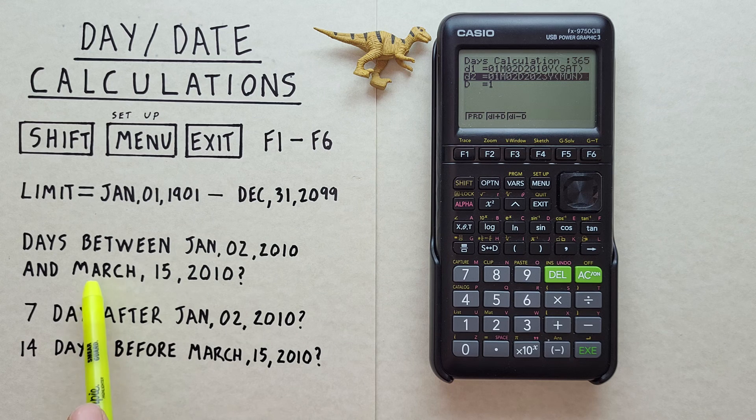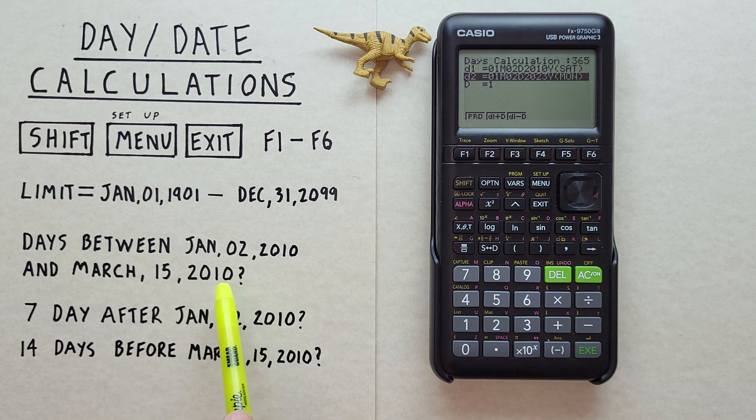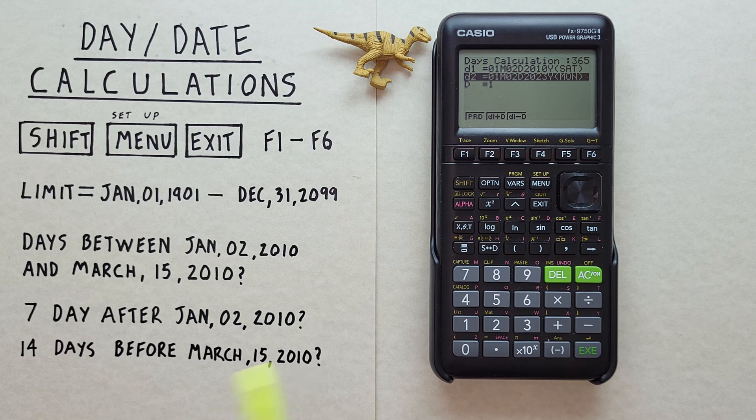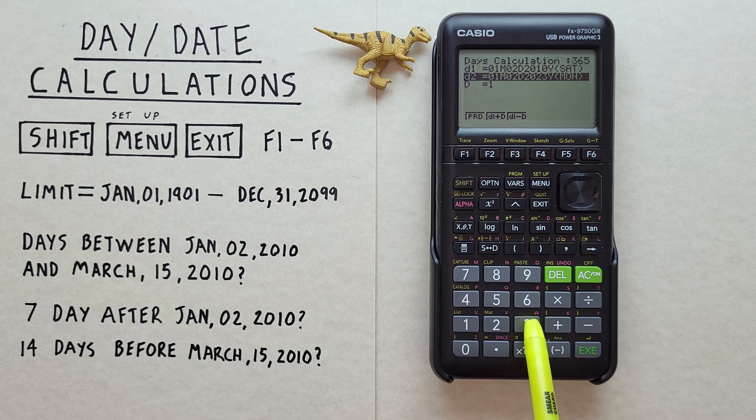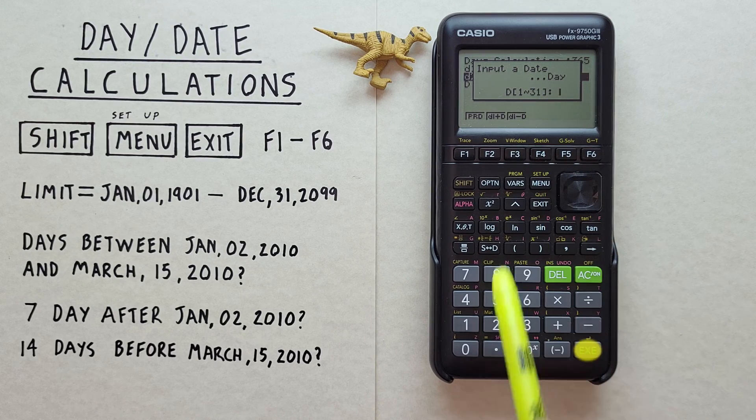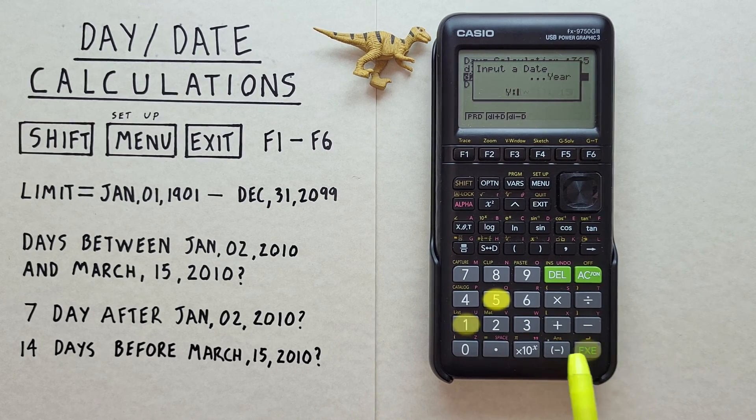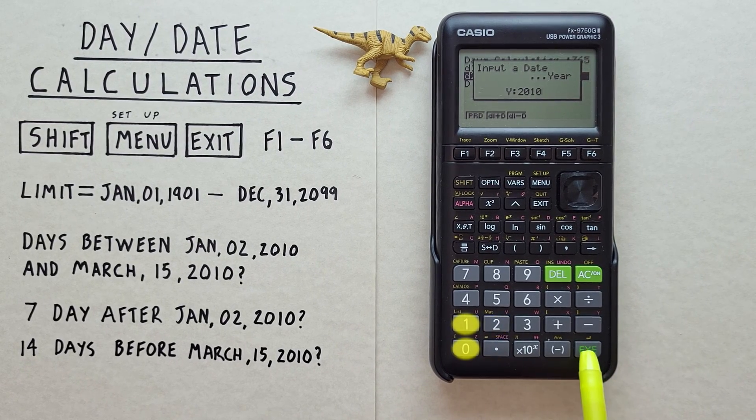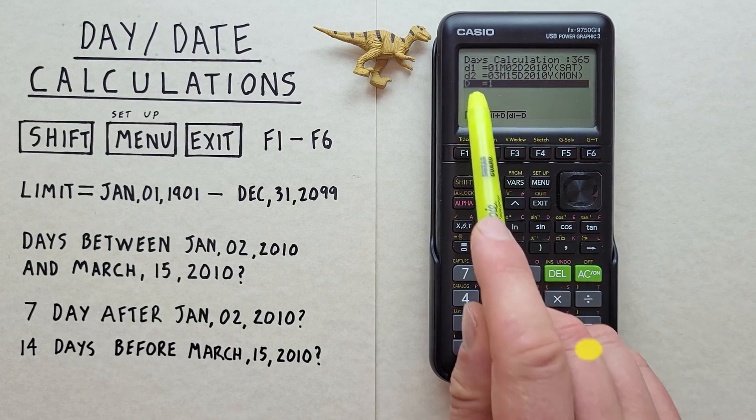Then for D2, we enter our second date, which was March 15 2010. We know that March is the third month. So we start with the three for March. 15 for the day. And 2010 for the year. Hit EXE. There we go.